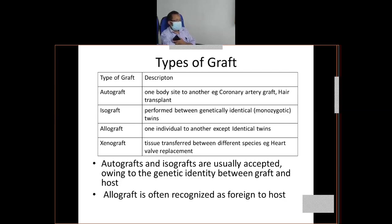The third is allograft, meaning the individuals are different. For example, a mother gives one organ to her child, or a father gives one organ to his side, or one individual donates an organ to another — you have heard about cornea donation. All these mostly come under allograft. Even dizygotic twins — if the twins are dizygotic, they will also come under allograft.